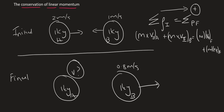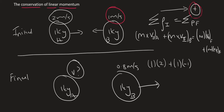The mass for object A is 1 and its velocity is positive 2, because it was going to the right. Then plus: the mass of object B is 1, and its initial velocity is minus 1, because it was moving to the left and we chose right as positive. This equals the mass of object A — which is 1 — times its unknown final velocity, plus the mass of object B — which is 1 — times its final velocity of positive 0.8, because it's going to the right.